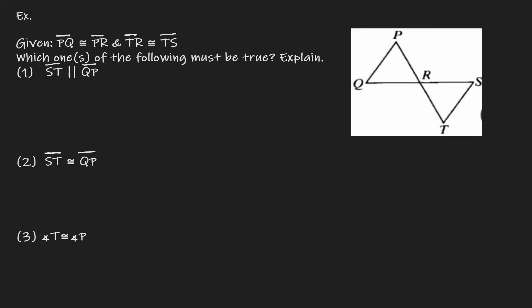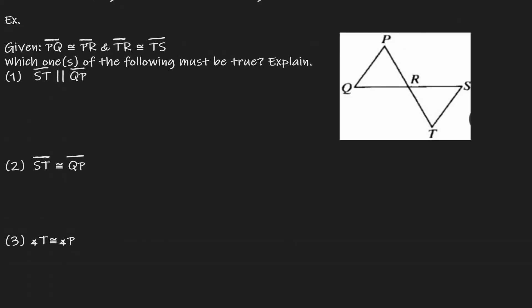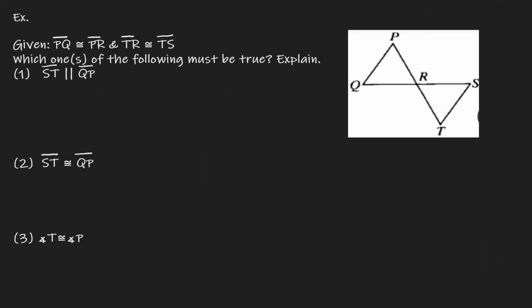Let's see what information we know about this problem. The first given is that PQ is congruent to PR. Let's put that on our diagram. So PQ is right here and PR is right here, so I know that those two sides are congruent to each other. Notice that if those two sides are congruent to each other, then we have an isosceles triangle. If we have an isosceles triangle, then I know that opposite angles are congruent to each other. Let's put that on the diagram — opposite of those marks are going to be congruent to each other.